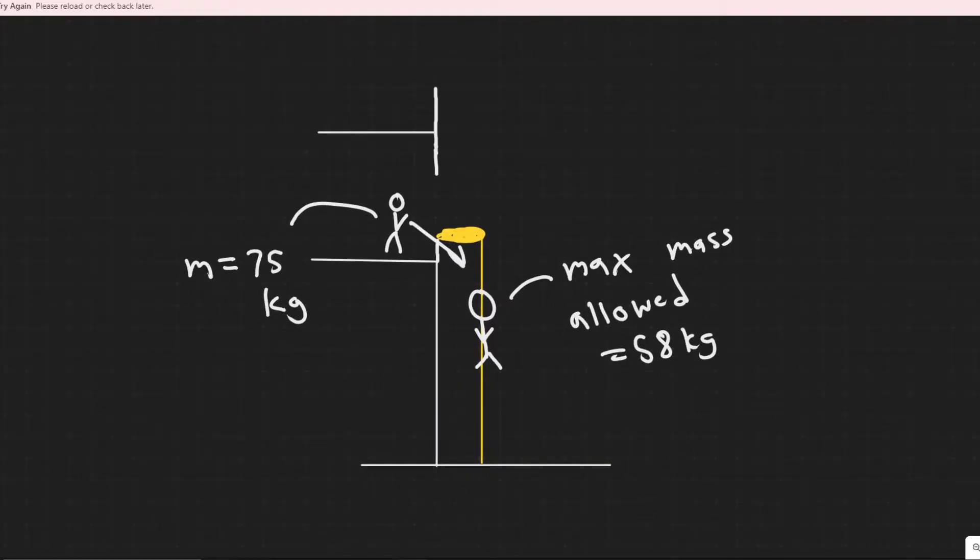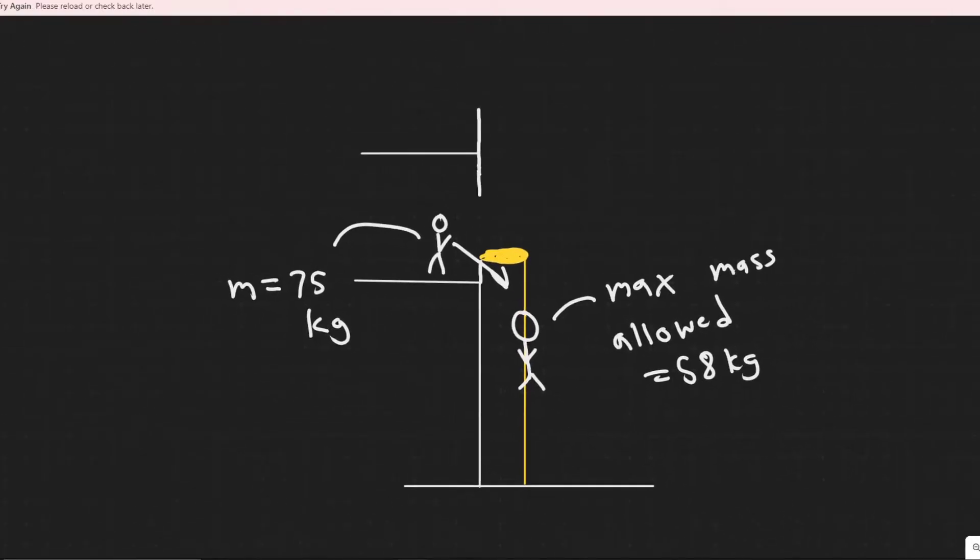So let's go ahead and draw what's going on here. We have this thief. He's going to get on this rope made of sheets. And we know the maximum mass this will allow is 58 kg or else it will break and he'll just fall to the ground and hurt himself. But we know the mass of this thief is actually 75 kilograms.